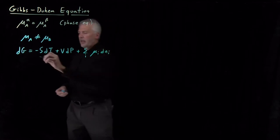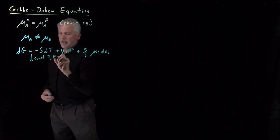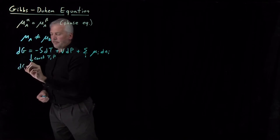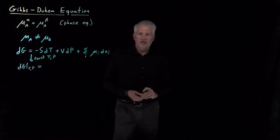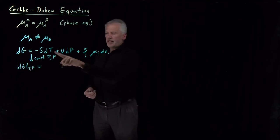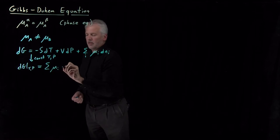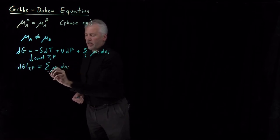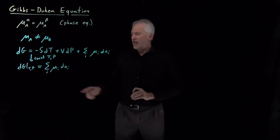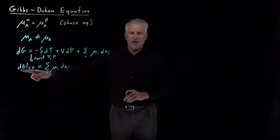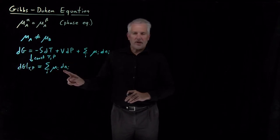At constant temperature and pressure, the dT and dP terms go to zero, and the only terms we have to worry about are those involving chemical potentials. This tells us how the Gibbs free energy of the system changes if we change the amounts of any of the components.